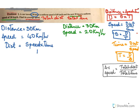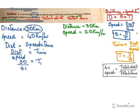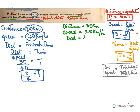Since distance equals speed into time, time will be equal to distance over speed. We call this t1. The distance is 30 kilometers and the speed is 40 kilometers per hour, so the time in the first case is t1 = 30/40 = 3/4 hours.